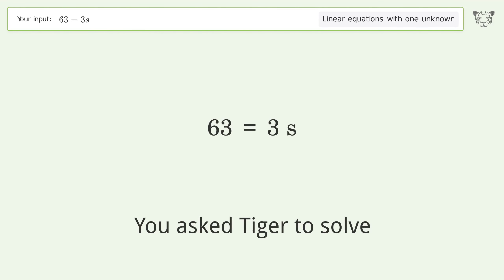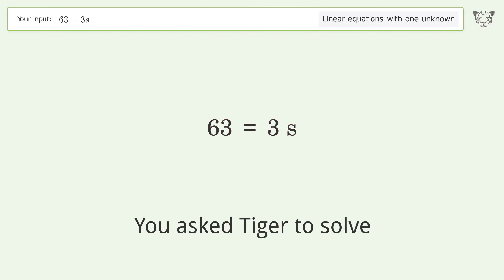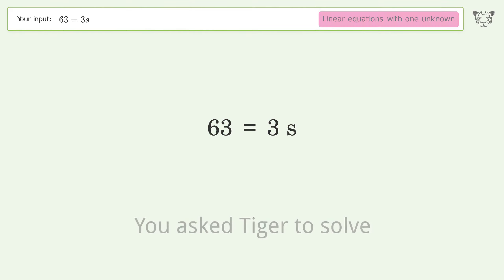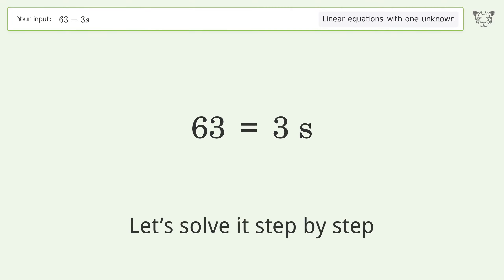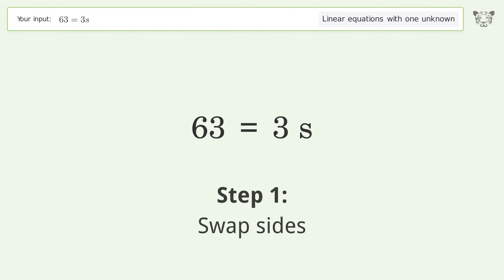You asked Tiger to solve this — it deals with linear equations with one unknown. The final result is s equals 21. Let's solve it step by step. First, swap sides.